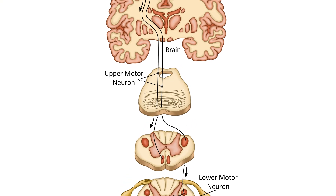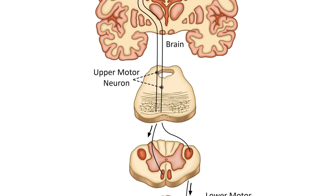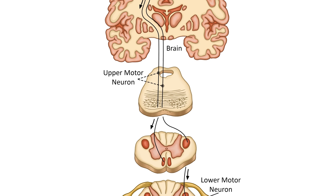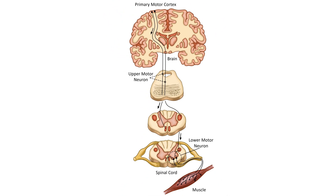Upper motor neurons are those in the central nervous system that allow for voluntary movement and provide muscle tone. Upper motor neurons transmit impulses to the lower motor neurons. Signs of upper motor neuron dysfunction include increased tone, spasticity, and hyperreflexia, but with reflexes preserved and atrophied muscles.